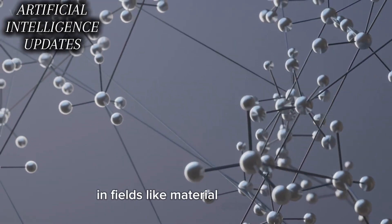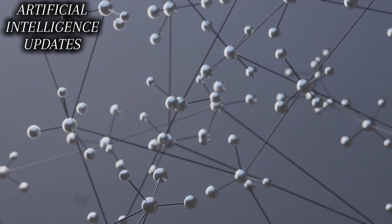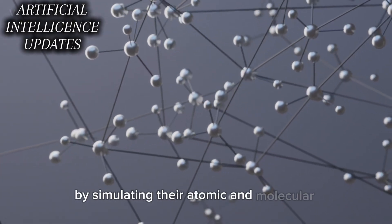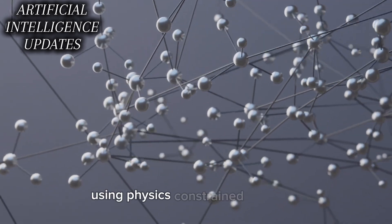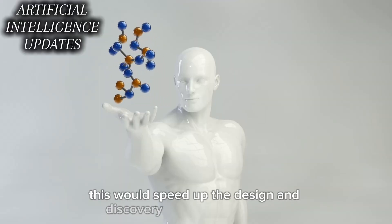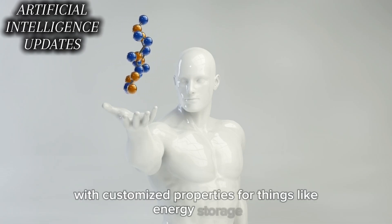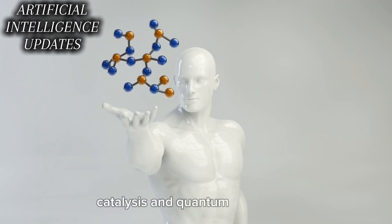In fields like material science and chemistry, we could virtually prototype new materials by simulating their atomic and molecular dynamics using physics-constrained machine learning models. This would speed up the design and discovery of novel compounds with customized properties for things like energy storage, catalysis, and quantum computing.